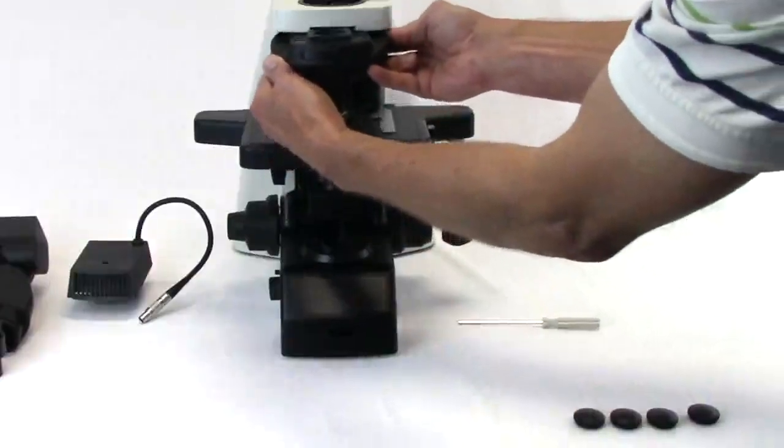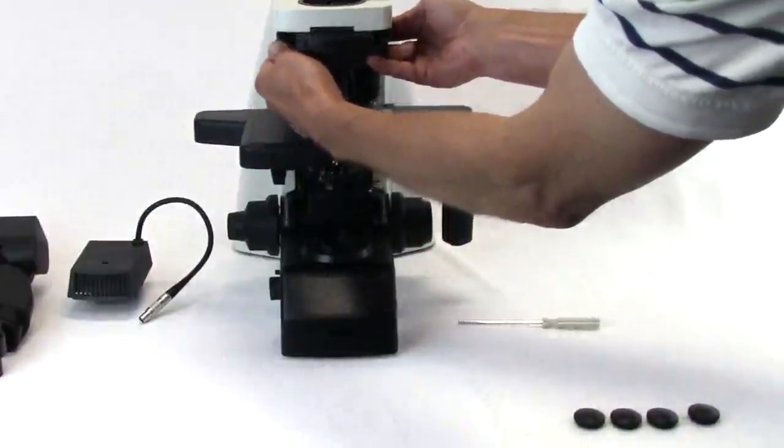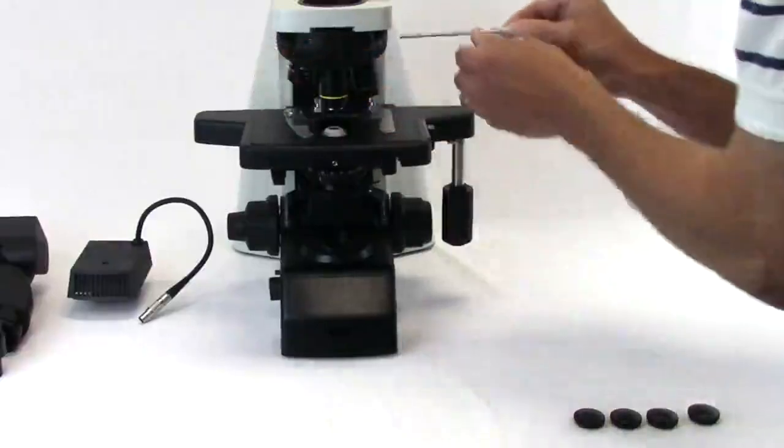Slide the nose piece back onto the dovetail mount on the microscope and retighten the lock screw with the hex wrench.